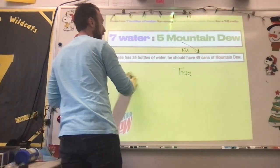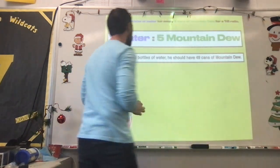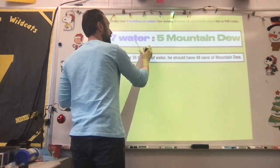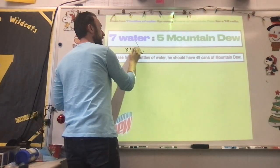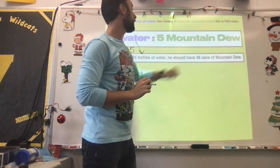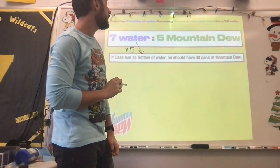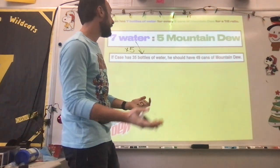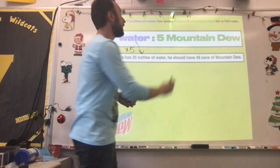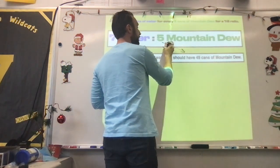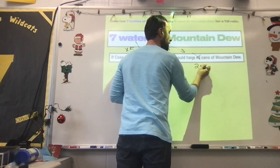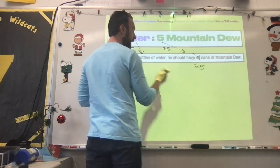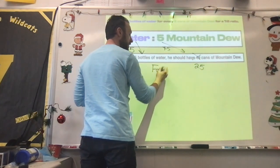if Case has 35 bottles of water, he should have 49 cans of Mountain Dew. So water, water, Mountain Dew, Mountain Dew. How does seven become 35? By multiplying by five. How does five become 49? Not by multiplying by five. It'd be times like nine something, but it's not going to be multiplied times five. Because if I said times five, five times five would be 25, not 49. If that was 25, that would be a true statement. But since it's not 25, that makes this a false statement.